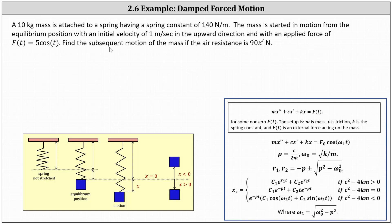We're asked to find the subsequent motion of the mass if the air resistance is 90 times x prime newtons. To begin, we use the differential equation mx'' + cx' + kx = F(t), where m is the mass, c is the friction or air resistance constant, k is the spring constant, and F(t) is an external force acting on the mass in the form of F₀ times cosine(ω₁t), or in our case more specifically, five cosine t.